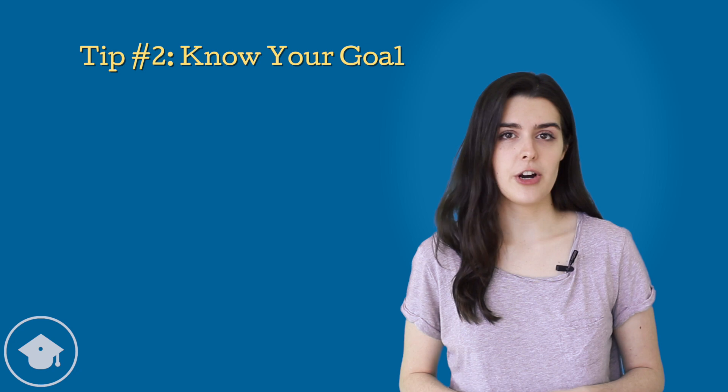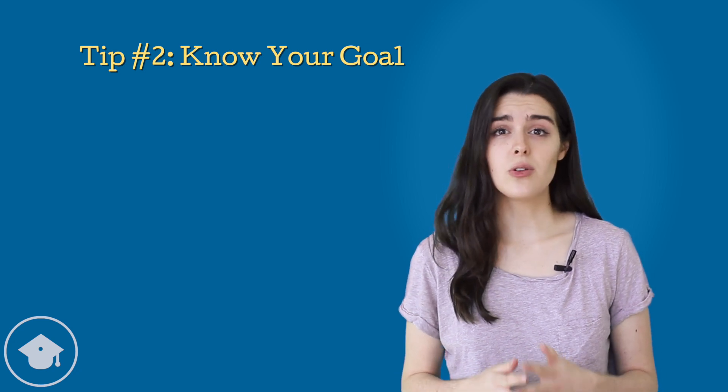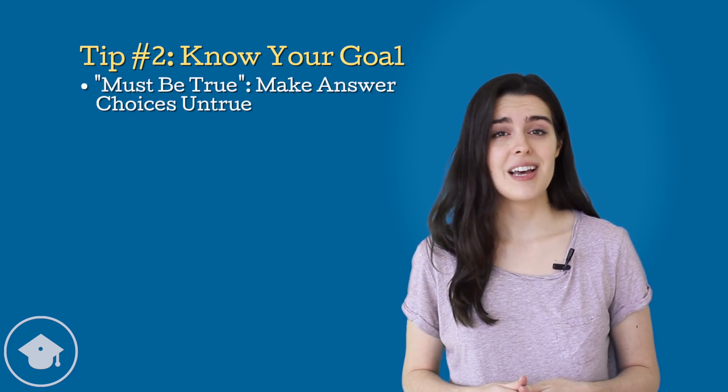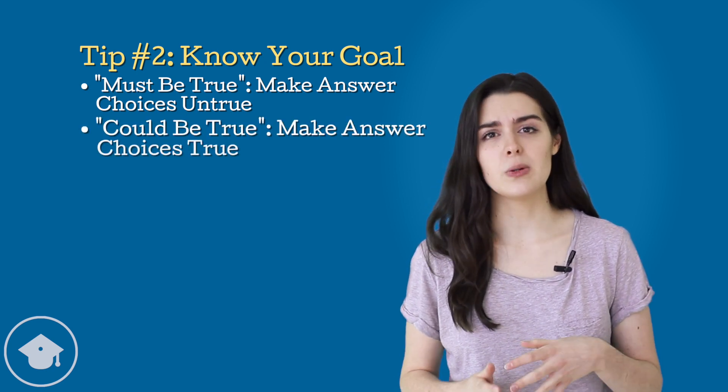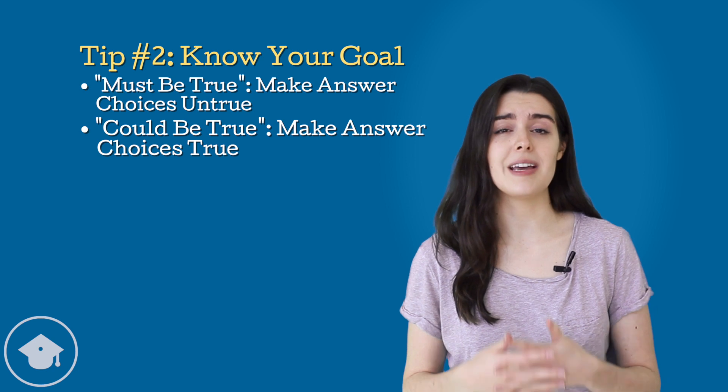On problem solving, our goals are similar. On must-be-true questions, our goal is to pick a number for each answer choice that will make that answer choice untrue. On could-be-true questions, on the other hand, our goal is to pick a number for each answer choice that will make each answer choice true. So how do we determine which numbers are likely to make our statements insufficient or our answer choices true or untrue?